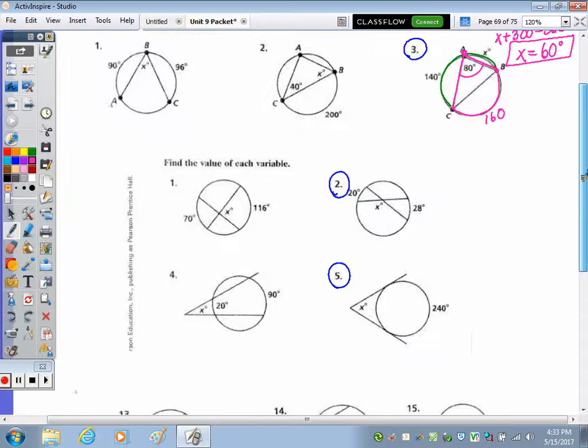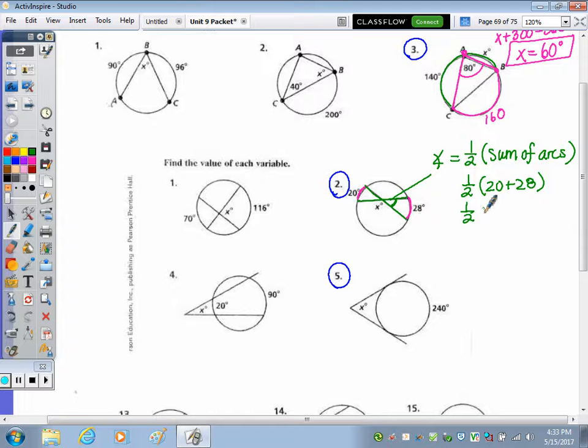Number two, the directions here say find the value of each variable as well. So we have an arc here of 20, an arc here of 28. Those arcs are formed by the intersection of these two chords. Now the angle, this angle that goes with the chord is half the sum of the arcs. So if I take half of 20 plus 28, 20 plus 28 is 48, half of 48 is 24. So this angle right here is 24 degrees.